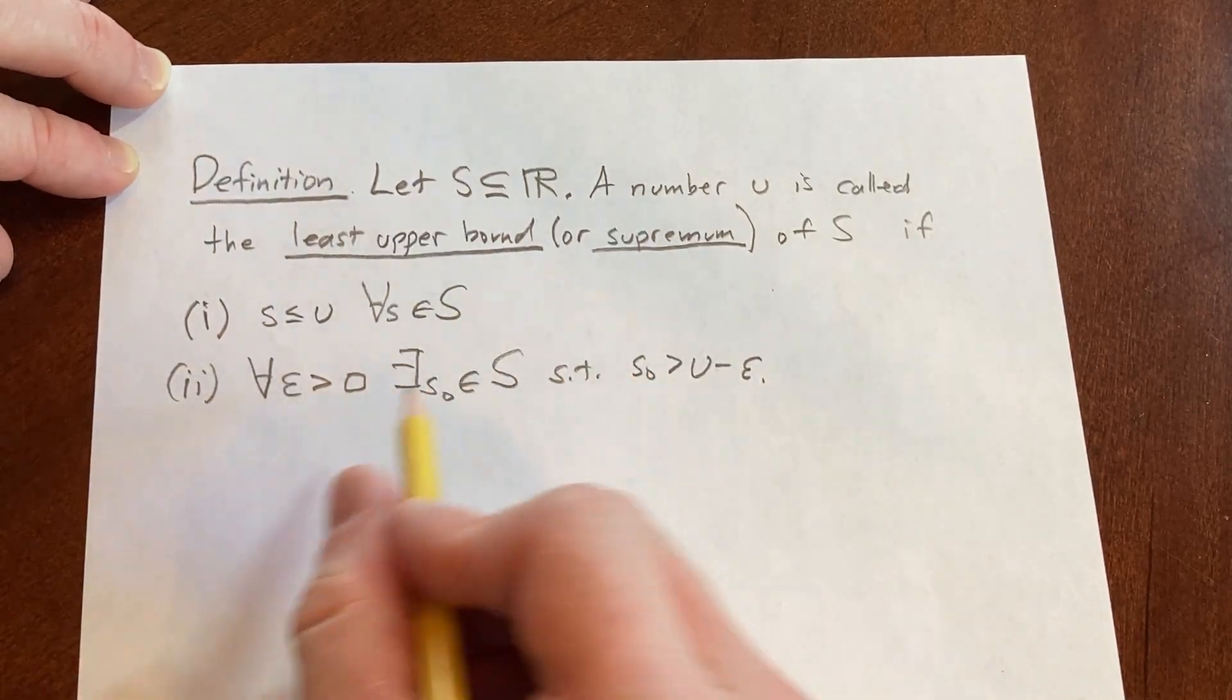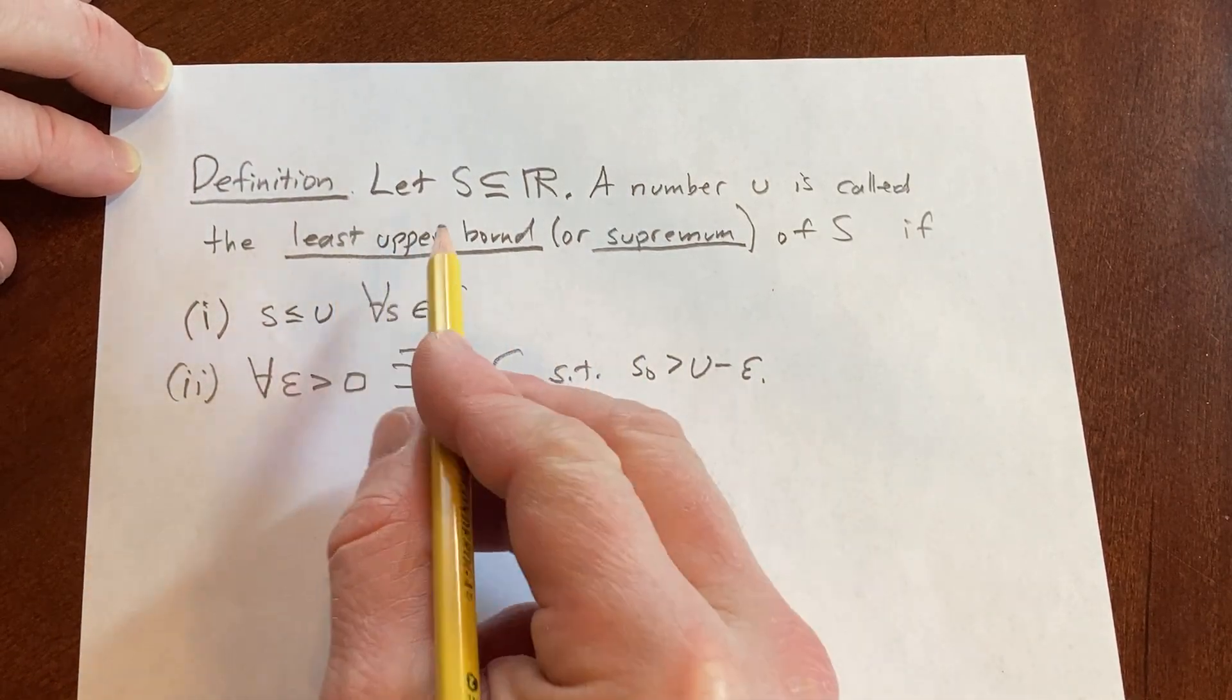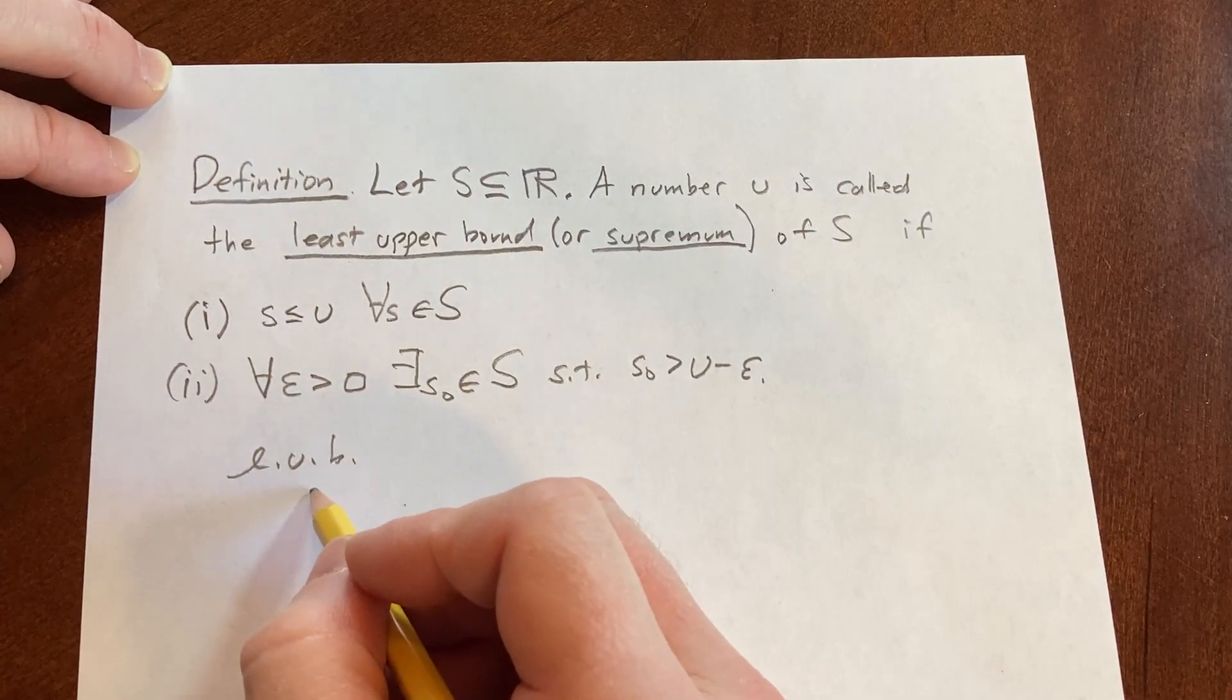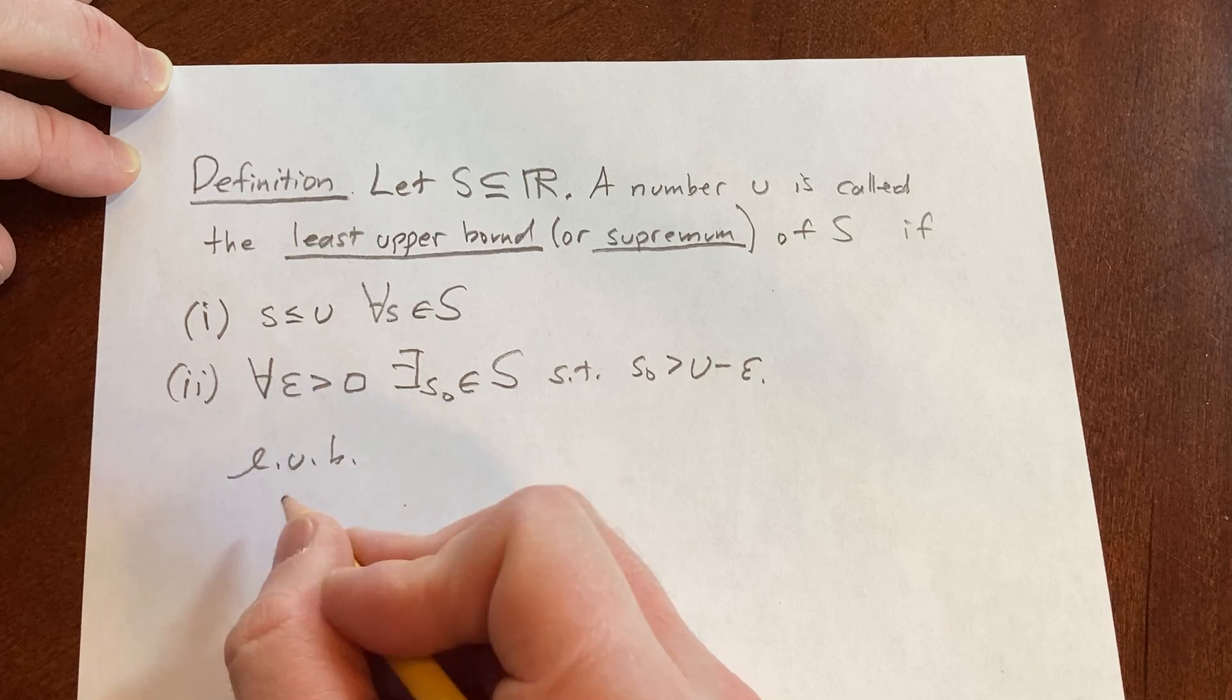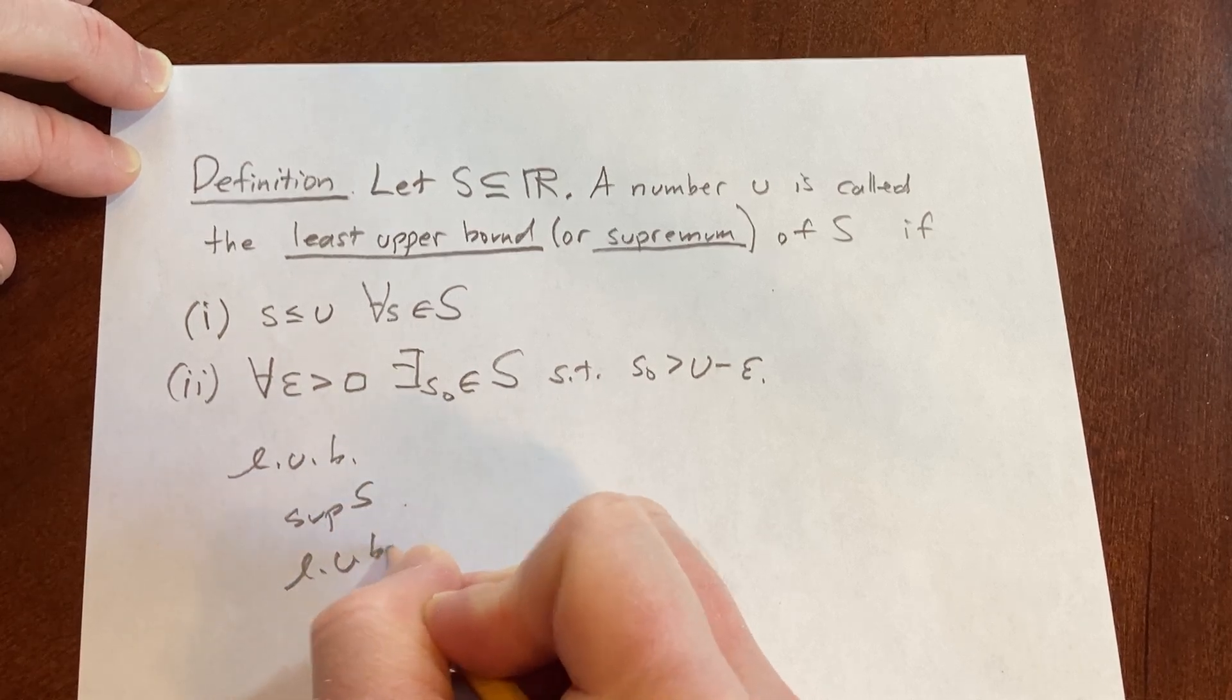And again, this is also called the supremum. You can abbreviate least upper bound as LUB, and for supremum you can use sup, sup S, LUB S. These are notations that you sometimes see.